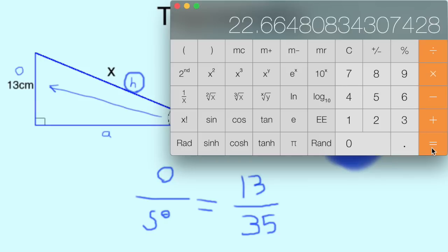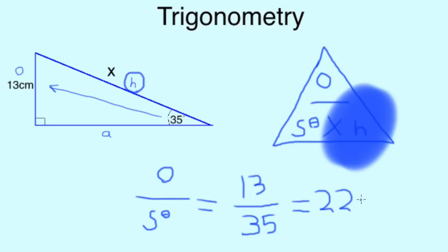Anyway, we hit equals, giving us the result of 22.66. So, the length of our hypotenuse is 22.66cm.